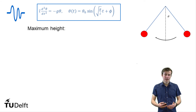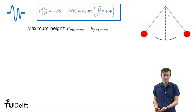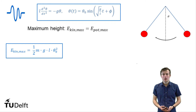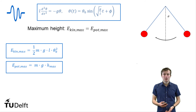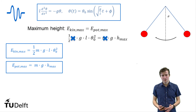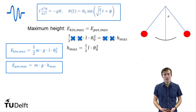If we are at the highest point, all our kinetic energy is transferred into potential energy. So the maximum kinetic energy equals the maximum potential energy. We derived that the maximum kinetic energy is one half times mass times g times l times theta zero squared, and the maximum potential energy is m times g times the maximum height. Setting those equal, we can cross out the mass on both sides and the g on both sides, giving us that the maximum height we can get is one half times l times theta zero squared.